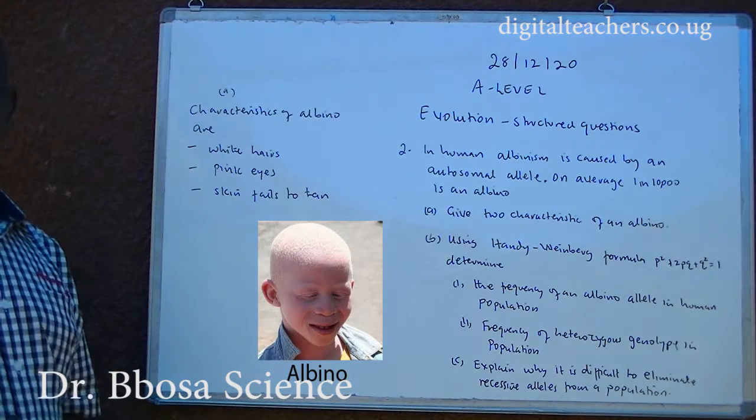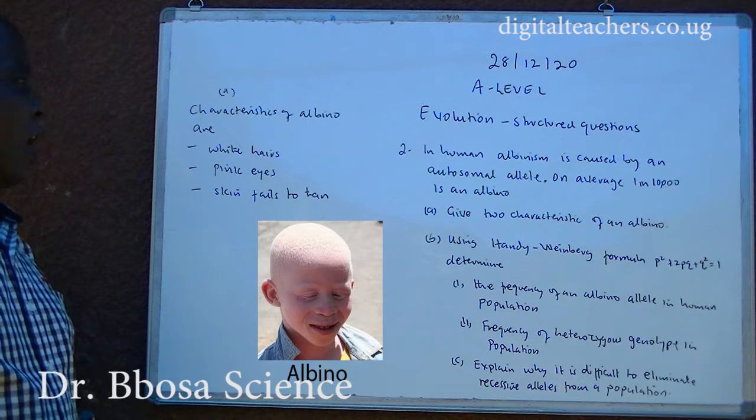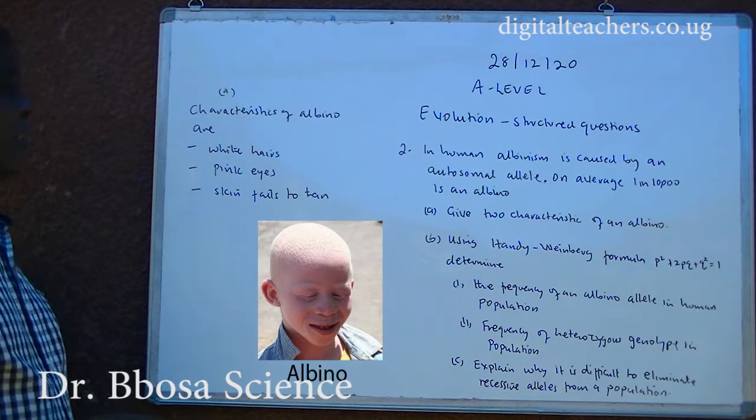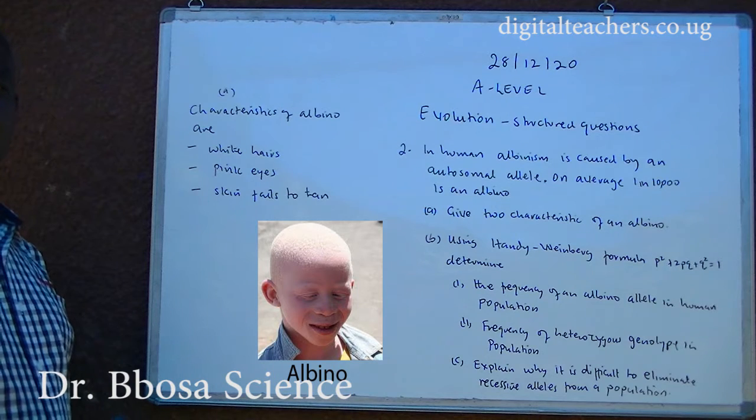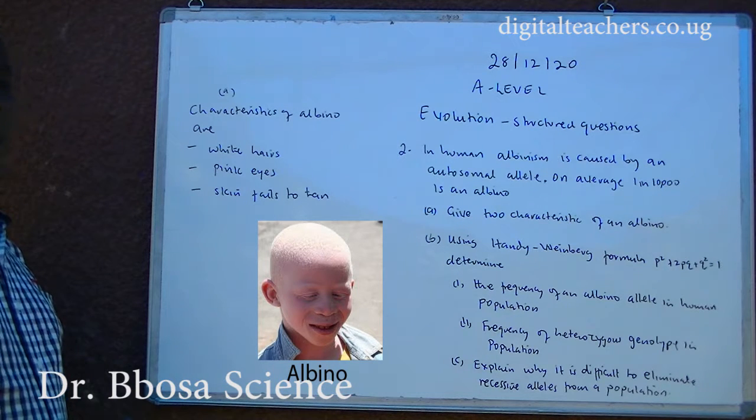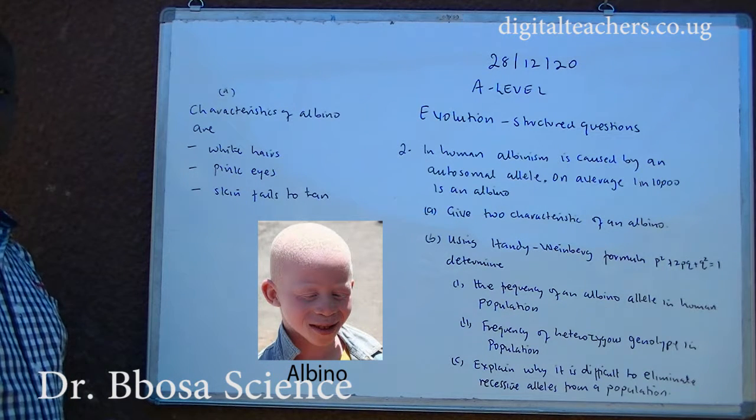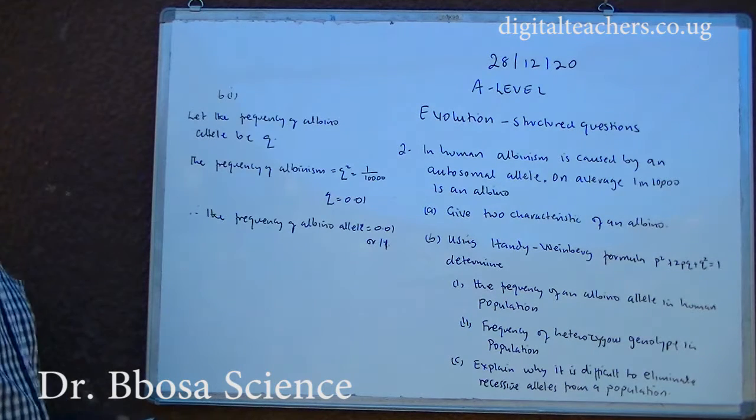Part A. Characteristics of albino are white hair, pink eyes, and the skin fails to tan.